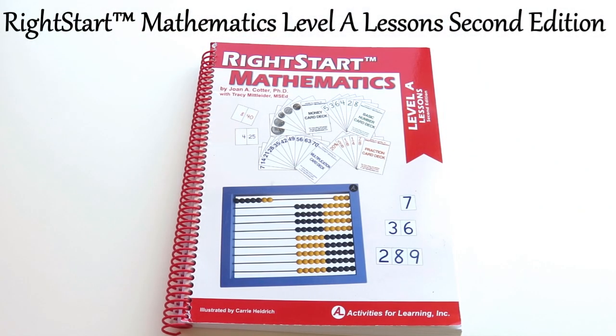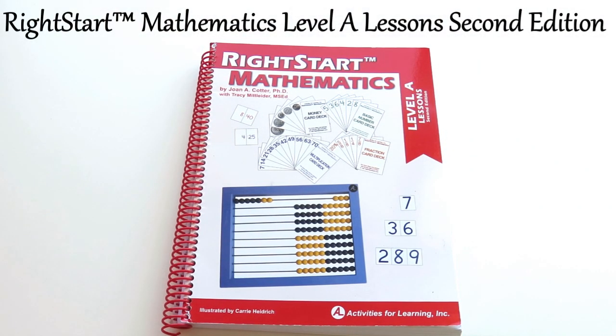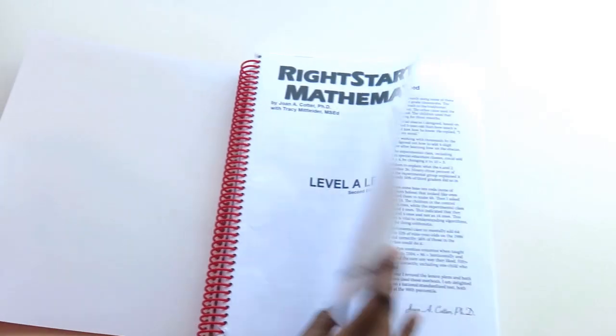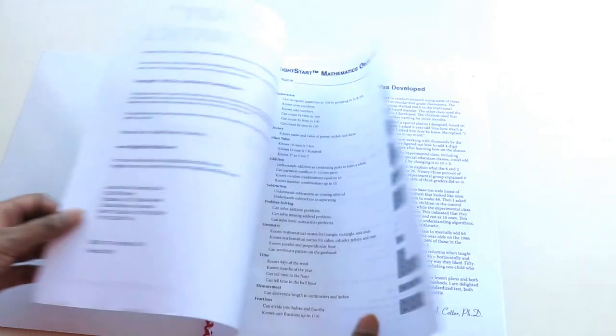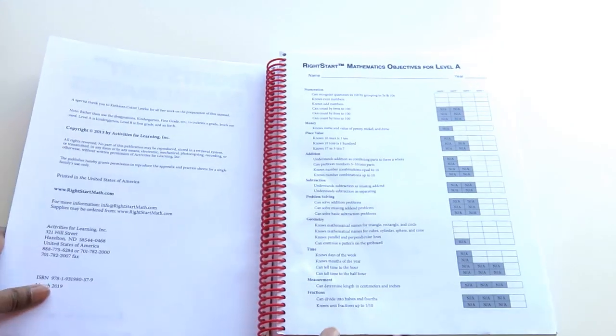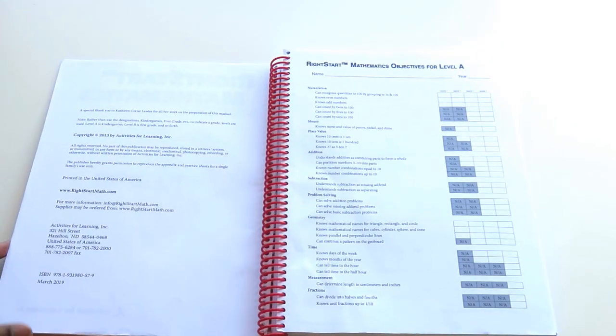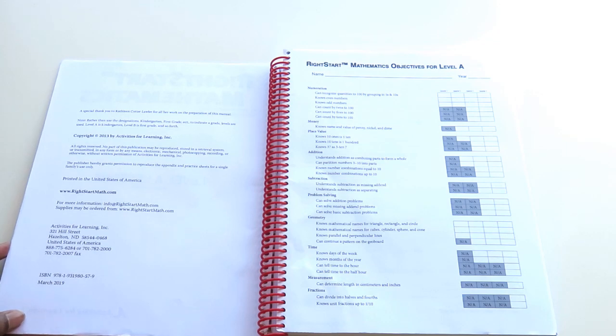This is the main book, the Right Start Mathematics Level A teaching guide. It starts off by giving you the objectives for level A and tells you what topics will be covered and addressed - numeration, place value, addition and subtraction, and so on.